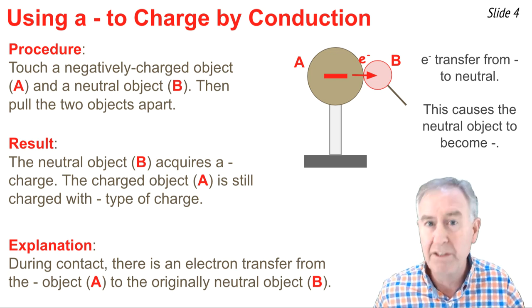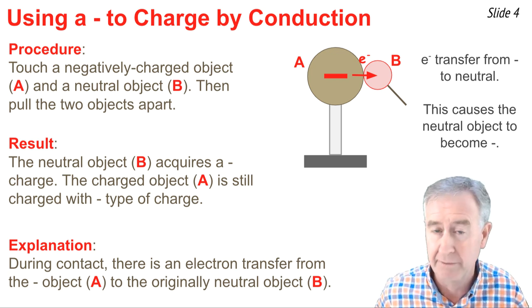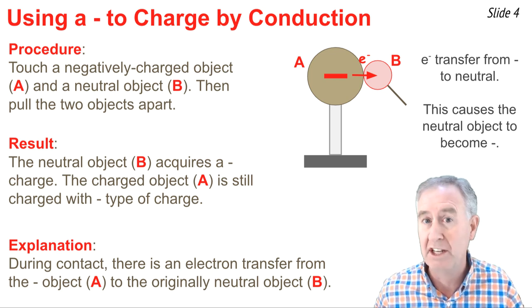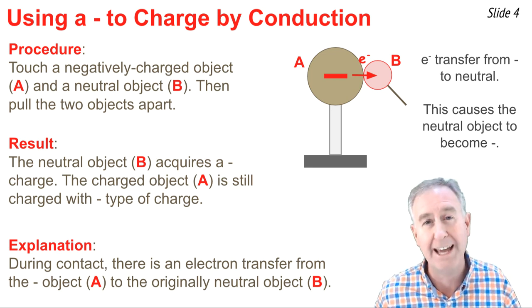But, since not all of the electrons have left object A, but only some of them, object A still has a negative type of charge, only less than it had before.